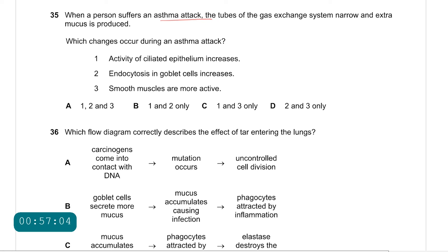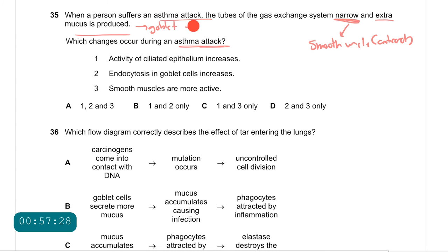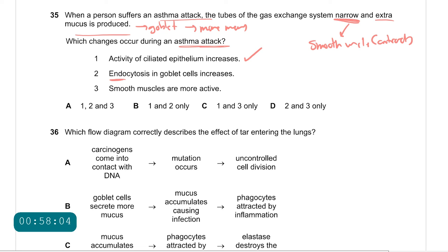Question 35: during an asthma attack, tubes of the gas exchange system narrow and extra mucus is produced. Narrowing means smooth muscles contract. Extra mucus means goblet cells release more mucus. Statement 1 — activity of ciliated epithelium increases — correct; ciliated epithelium has cilia that sweep mucus. Statement 2 — endocytosis in goblet cells increases — incorrect; it is exocytosis. Statement 3 — smooth muscles are more active, meaning they contract more — correct. Answer is C.